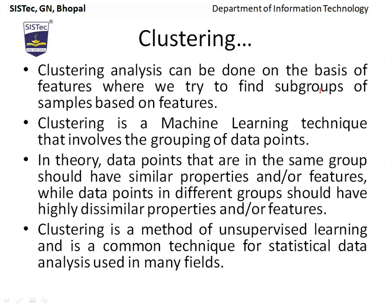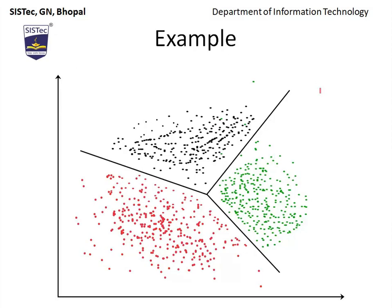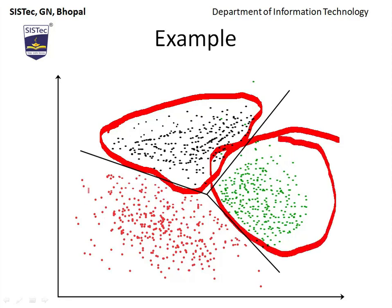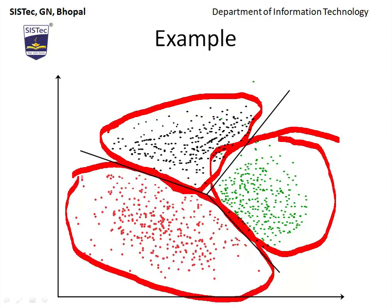To understand clustering, let's take a simple example. In this diagram we have taken points of 3 different colors. You can understand these colors as features or properties. Data points with similar type of properties should come together. As seen here, one cluster shows similar type of properties, another cluster shows different data features, and a third cluster shows yet another type of behavior. So the task of clustering is to identify similar type of groups according to features.